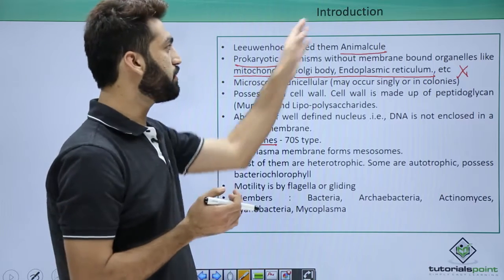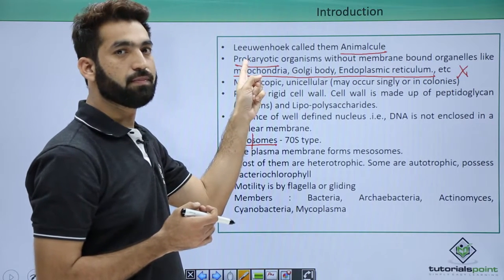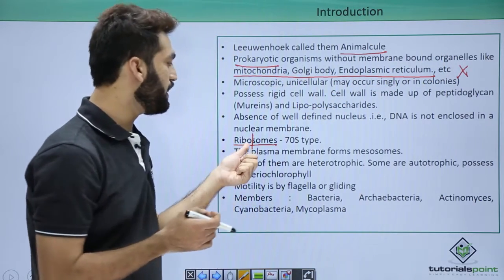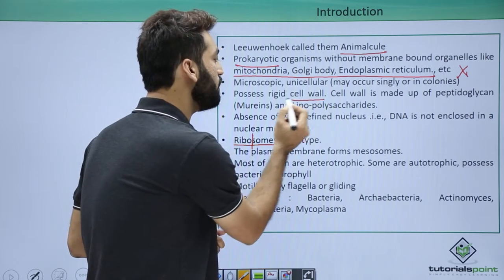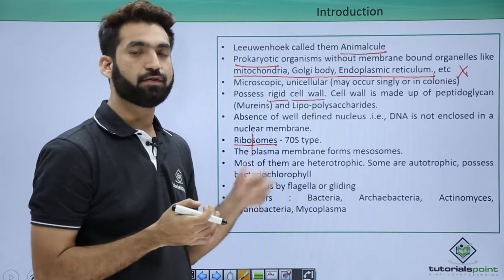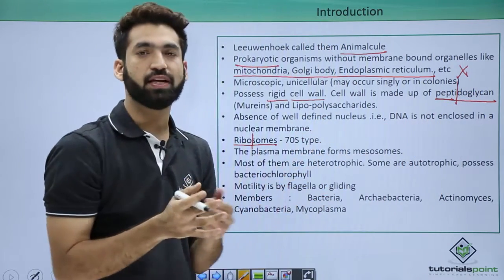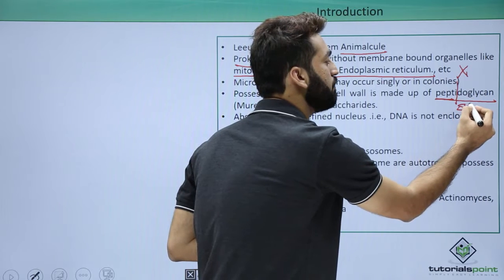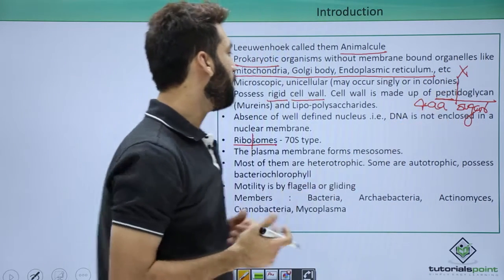So summarizing: Monera members are prokaryotes, they are called animalcules, they have primitive nuclei, membrane-bound organelles are absent, and they only have ribosomes which are 70S type. When you talk about the cell wall, it is quite rigid in Kingdom Monera and is made up of peptidoglycans. Peptidoglycans are made up of peptide, meaning the bond between amino acids, and glycans meaning sugar. So peptidoglycans are made up of sugar and a combination of four amino acids.